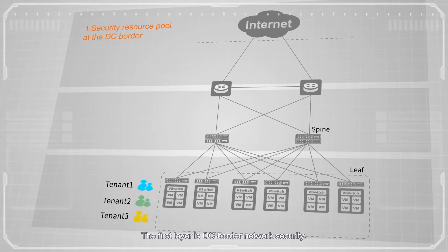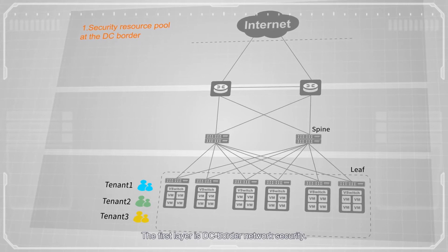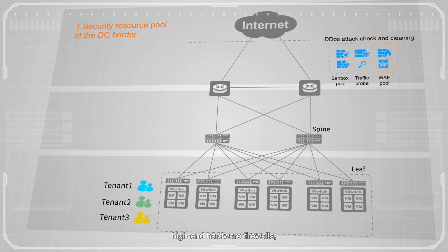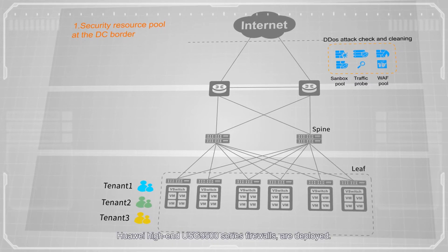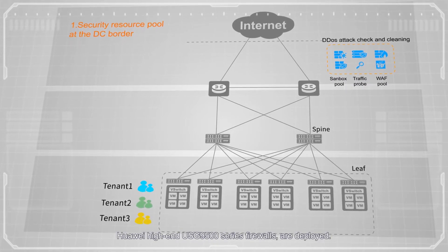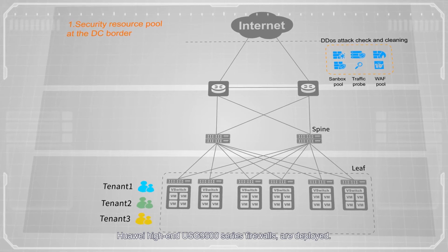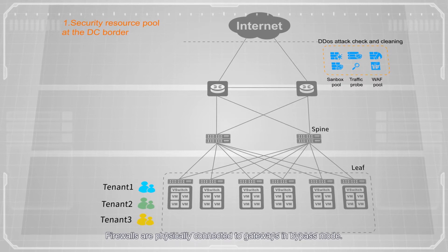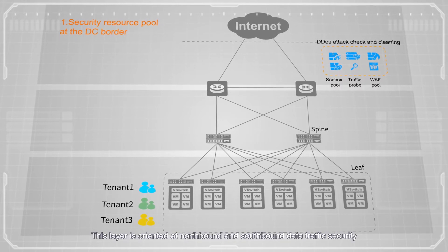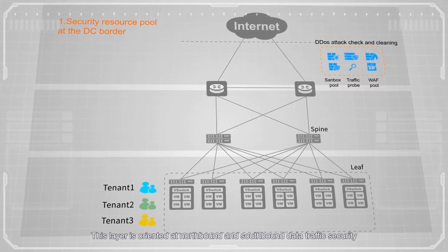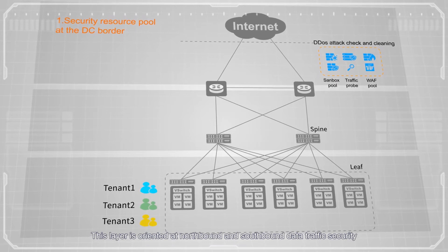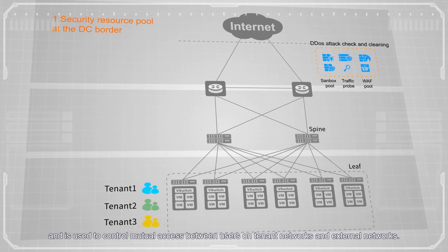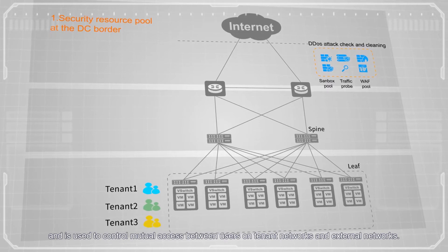The first layer is DC border network security. Generally, high-end hardware firewalls — for example, Huawei high-end USG 9500 series firewalls — are deployed. Firewalls are physically connected to the gateways in bypass mode. This layer is oriented at northbound and southbound data traffic security, and is used to control mutual access between users on tenant networks and external networks.